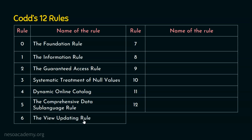Rule number 6 is the view updating rule. For a table, we can create multiple views. Whenever we update any view, that should also update the table. All data are stored in the relations, and views are created from them — both refer to the same data in the same memory location. So any RDBMS must support the view updating rule: whenever a view is updated, the underlying relation should also be updated.